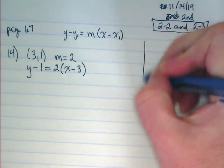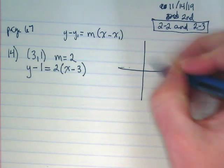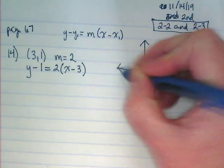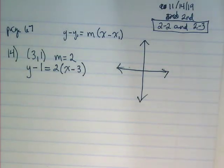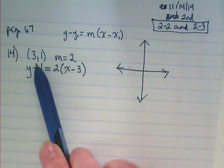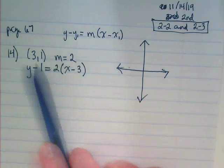Just draw a really quick x, y chart. Or, I'm sorry, x and y axes, make a coordinate plane. We're going to take our point, 3 comma 1, and we're going to make a pretty good guesstimate of where that would be on our sketched graph.